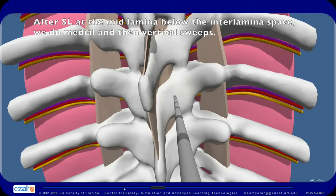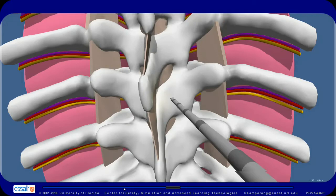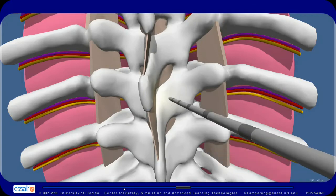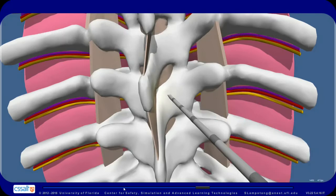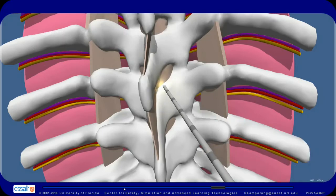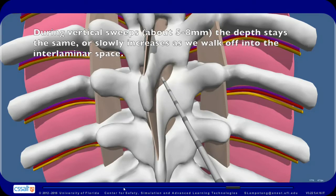After safe landing at the mid-lamina below the interlaminar space, we do medial and then vertical sweeps. During medial sweeps, about 5-8mm, we usually feel a gradual decrease in depth. During vertical sweeps, about 5-8mm, the depth stays the same or slowly increases as we walk off into the interlaminar space.